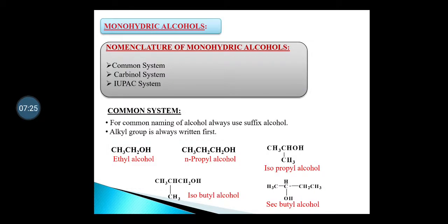Next, we have to learn the nomenclature of monohydric alcohols. There are three naming systems: common naming, IUPAC naming, and the carbinol system. For common naming of alcohols, always use the suffix 'alcohol'. The alkyl group is always written first, followed by the word alcohol.